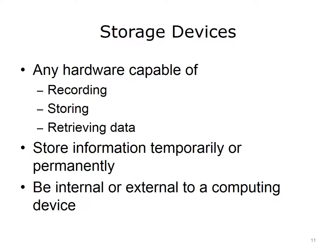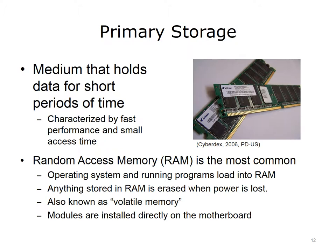A storage device is any hardware capable of recording, storing and retrieving data. It can store information temporarily or permanently, and can be internal or external to a computing device. Primary storage devices, also known as primary memory, is a medium that holds data for short periods of time. It is characterized by fast performance and fast access time. The most common primary storage is RAM, or random access memory. RAM is the primary storage area used by programs running on a computer. The operating system and running programs load directly into RAM. Anything stored in RAM is erased when power is lost, which may be a painful experience. Therefore, RAM is known as volatile memory. RAM modules are installed directly on the motherboard. The image on the right shows two dynamic RAM, or DRAM, modules.